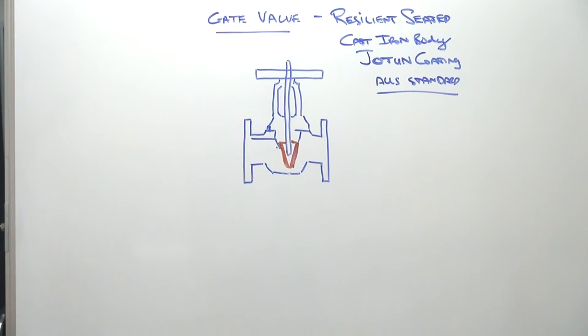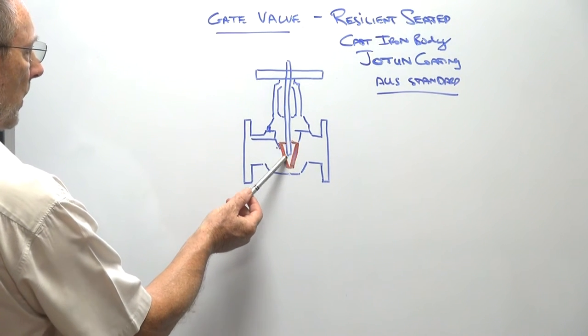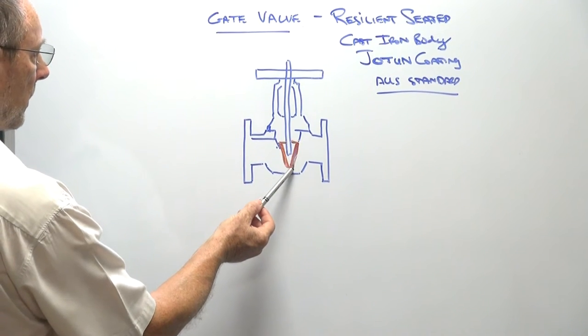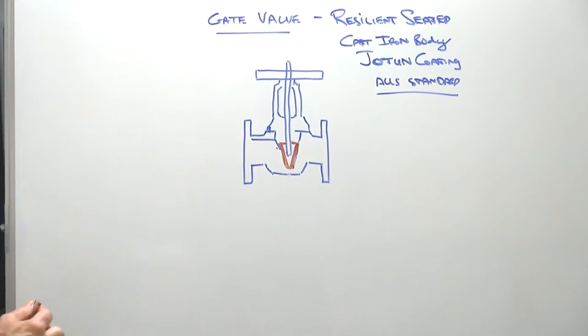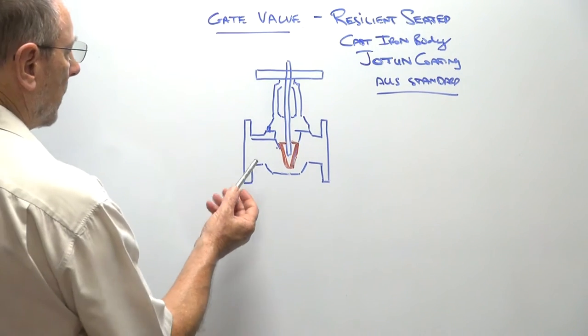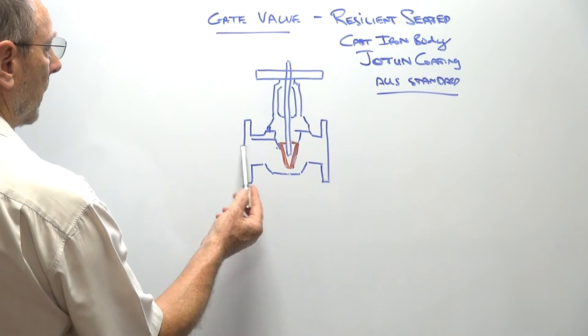It's an outside stem and yoke assembly, which I'll show you on the original unit in a second. It has a wedge gate which has a resilient seating around it, EPDM or NBR, and the flanges at either end.